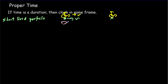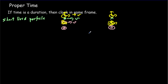This is really the same problem as if we had a rocket ship moving at a speed V between two planets, say A and B. Once again, that reference frame attached to the rocket ship — its clock is going to measure the proper time, because it's in the same reference frame for the entire duration of the trip made by the ship.